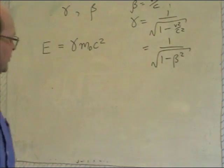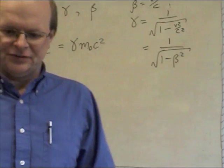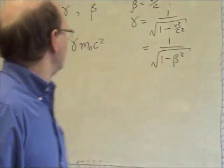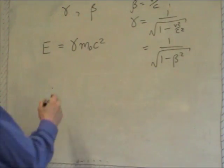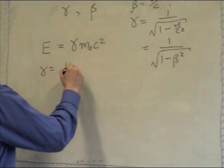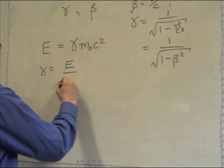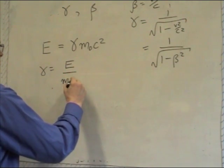In this case, what we've got is the total energy and the rest mass, and we want to figure out gamma, because gamma is going to give us the speed. So the easy way to get gamma is just to take the ratio of the total energy to the rest energy m0 c squared.